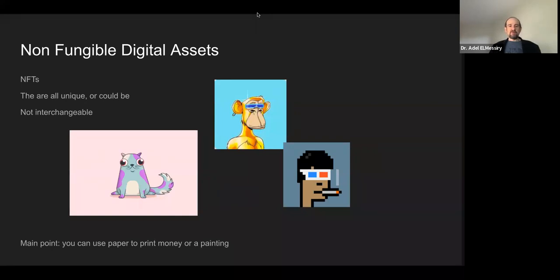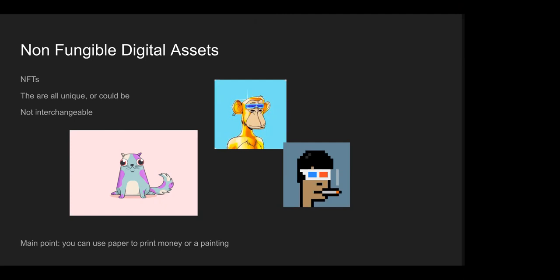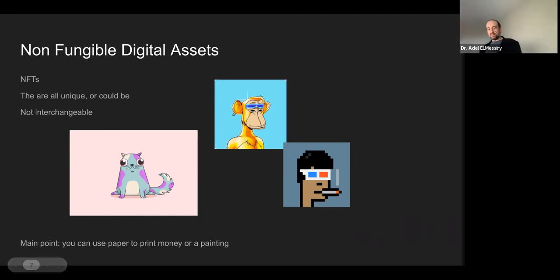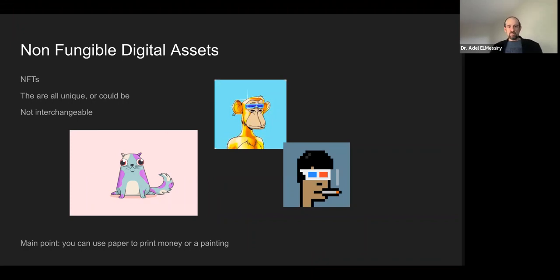NFTs can embody things like the deed to your house, or be used as a way to embody contracts within a system. The main point is that creating digital assets is just like creating digital paper — and like paper, you could print a dollar on it and it becomes fungible money, or you can print a Picasso on it and it becomes non-fungible. Both are done the same way.